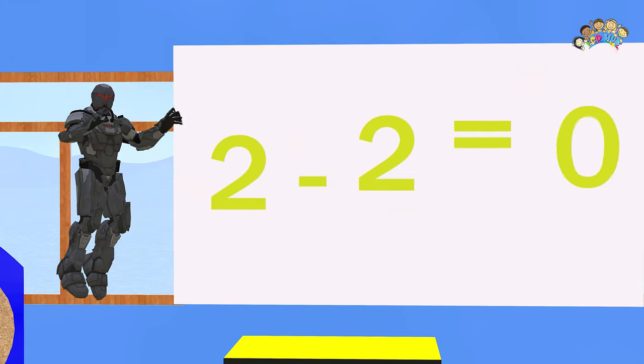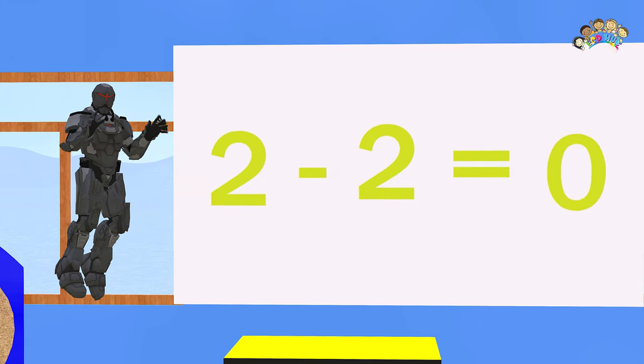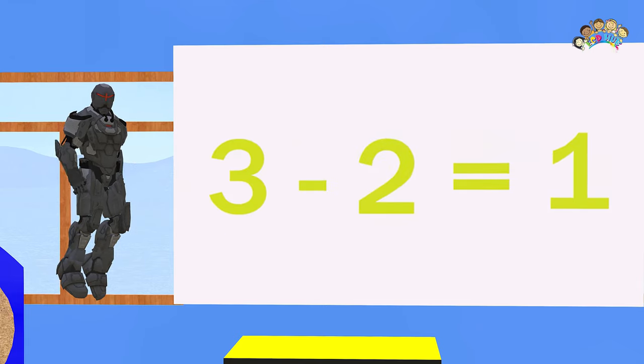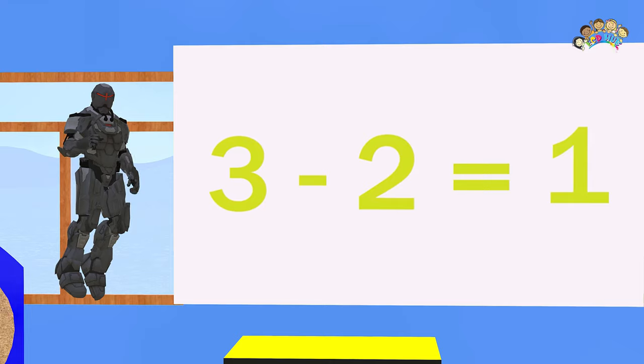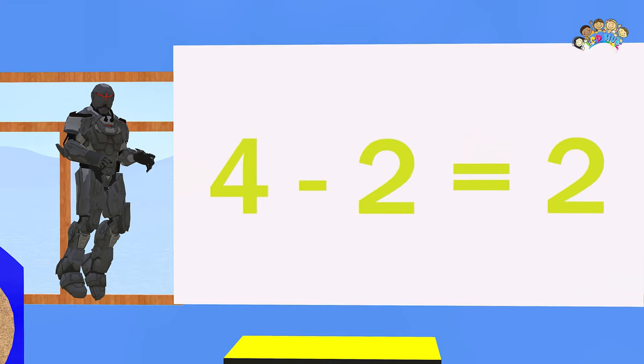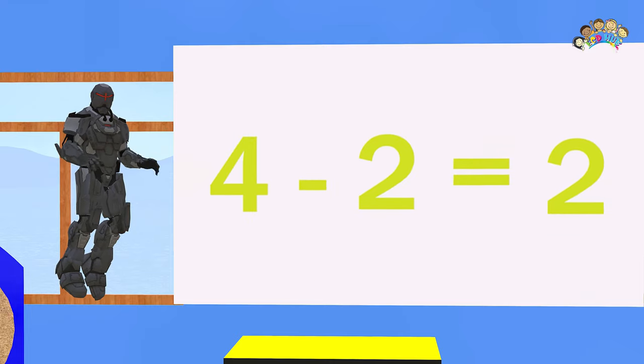Now let's do the twos. Two minus two equals zero. Three minus two equals one. Four minus two equals two.